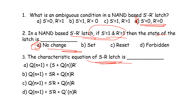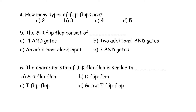Next question: the characteristic equation of SR latch. The SR latch characteristic equation — if you have a specific output required to satisfy the truth table, for the SR latch, Q(n+1) = S + Q(n)·R'. This is the correct answer that satisfies the truth table.